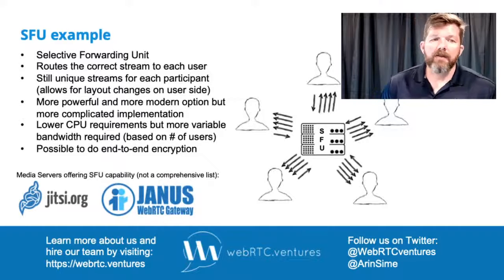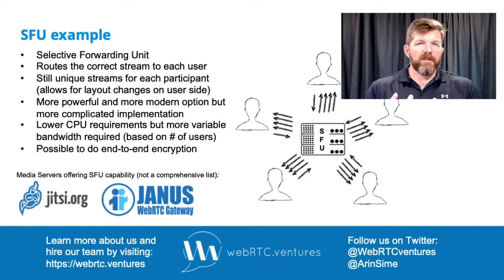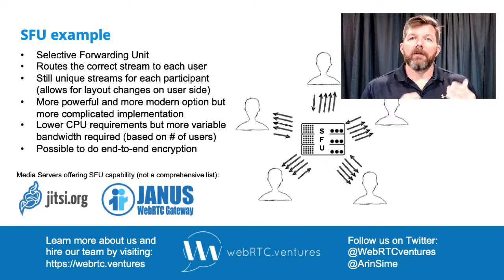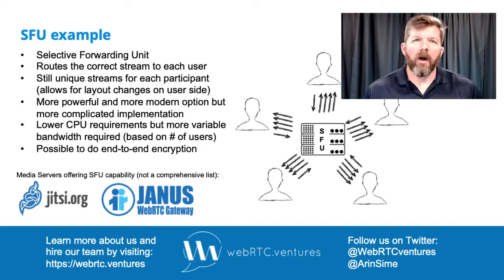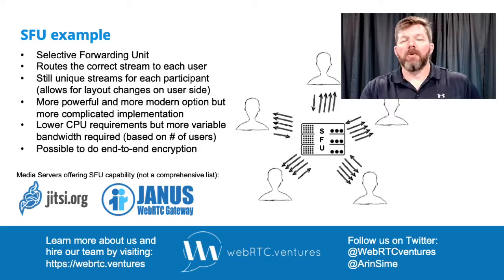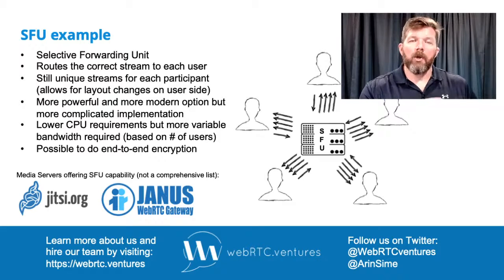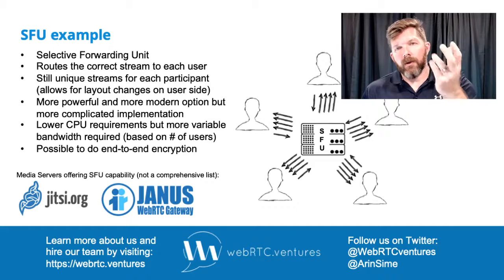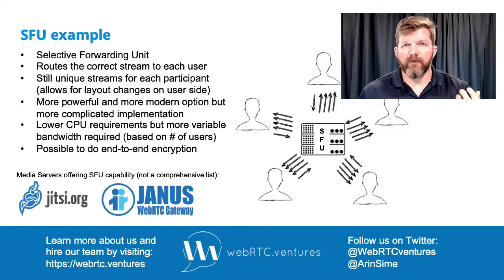An SFU — a selective forwarding unit — looks a little different. As shown in the diagram, each user is still only connected to that individual media server instead of running a full mesh network, which is good. They're still only sending one set of video and audio upstream to that media server. But now the SFU sends them an individual stream back for each participant in the call. In this example with five people, each one sends up their audio and video and receives back four streams — one for each of the other four participants.